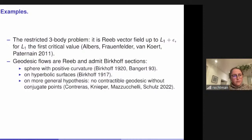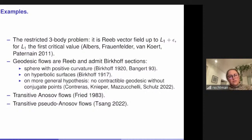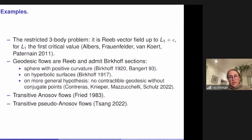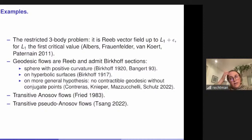There is very nice work by David Fried where he proved that transitive Anosov flows always have Birkhoff sections, though with no control on the complexity of the sections. Recently, Tsang — a student of Ian Agol — constructed Birkhoff sections for transitive Anosov flows on three-manifolds using veering train triangulations. Among Reeb vector fields there are some results especially about disk-like Birkhoff sections.